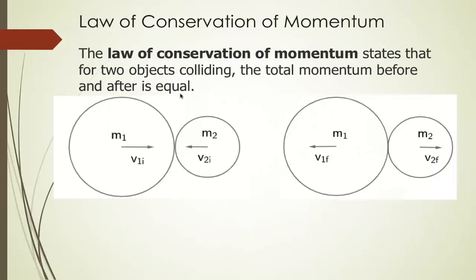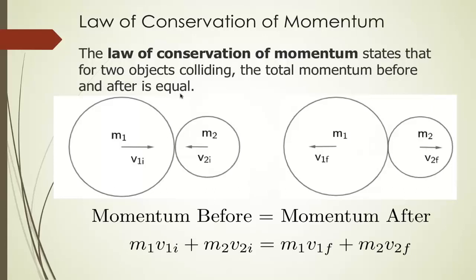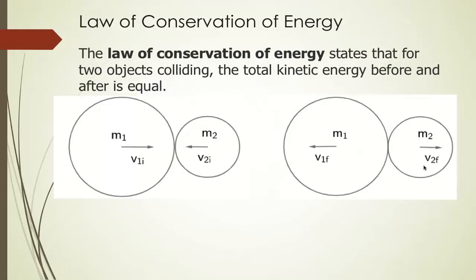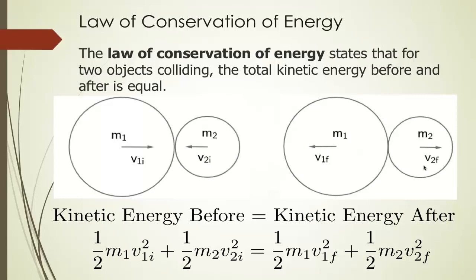The law of conservation of momentum says that for two objects that collide, the total momentum before and after is the same. In other words, m1 times v1 initial plus m2 times v2 initial equals m1 times v1 final plus m2 times v2 final. The picture on the left is before the collision (initial velocities); the picture on the right is after the collision. The law of conservation of energy says the total energy is also conserved — the kinetic energy before equals the kinetic energy after.